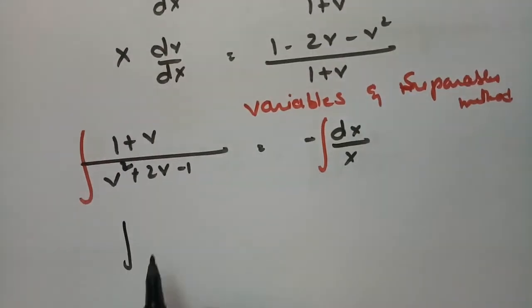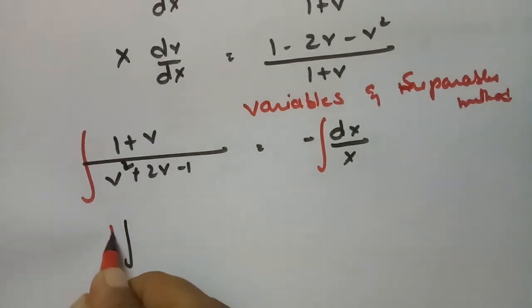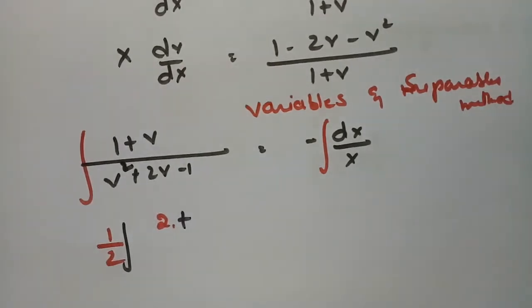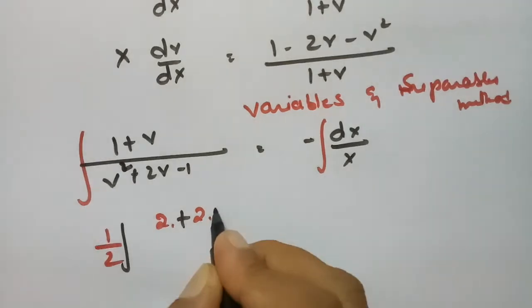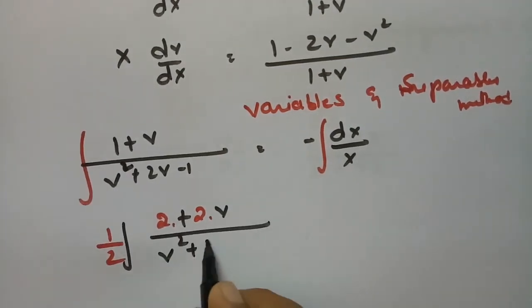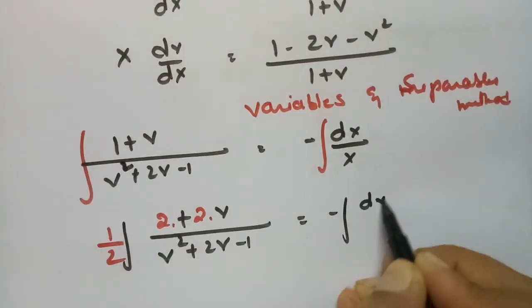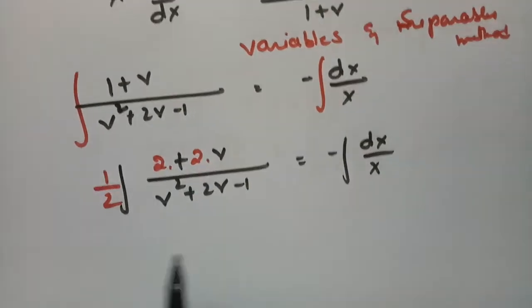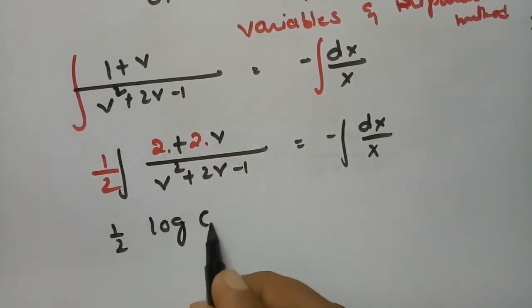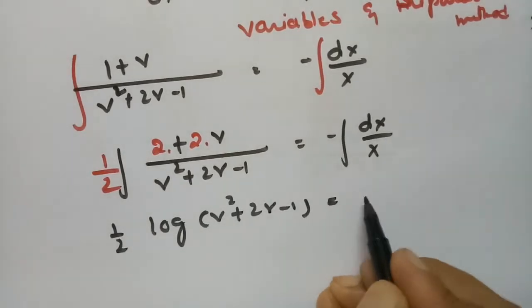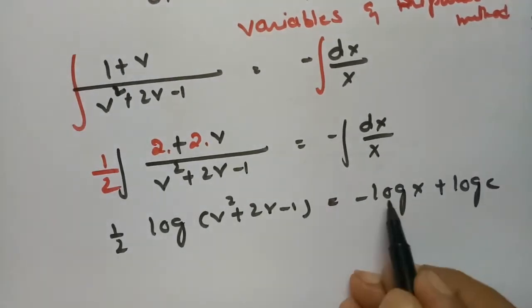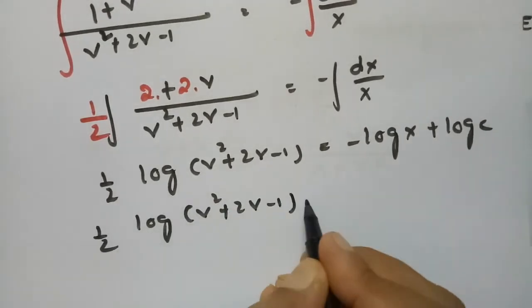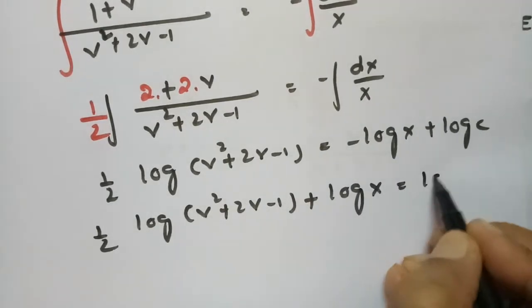Multiplying and dividing by 2: (1/2)∫(2 + 2v)/(v² + 2v - 1) dv = -∫dX/X. Integrating: (1/2) log(v² + 2v - 1) = -log X + log C. Bringing -log X to the other side: (1/2) log(v² + 2v - 1) + log X = log C.